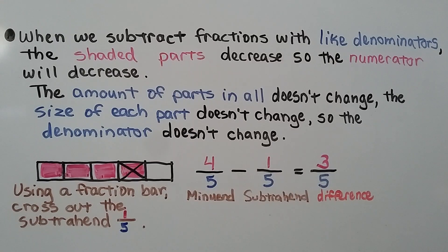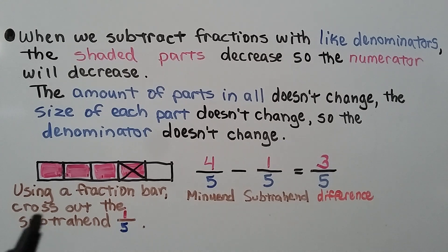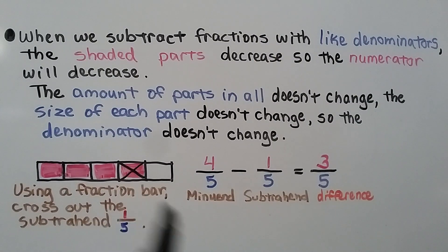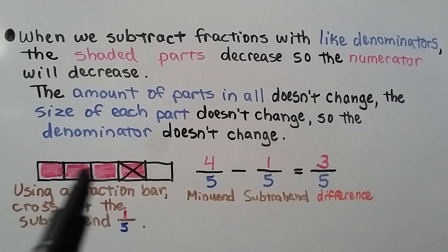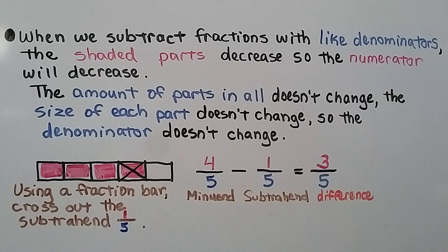When we subtract fractions with like denominators, the shaded parts decrease, so the numerator will decrease. The amount of parts in all doesn't change — there are 5 parts in all, and the denominator shows us there are 5. The size of each part doesn't change, so the denominator doesn't change. Using a fraction bar, we cross out the subtrahend 1 fifth. We can see there are 3 fifths left. 4 fifths is the minuend, 1 fifth is the subtrahend, and 3 fifths is the difference.